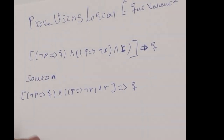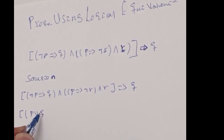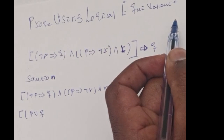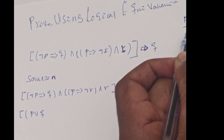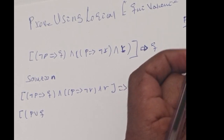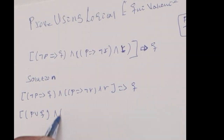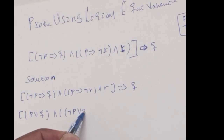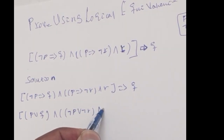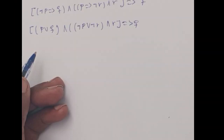So, I either know P or Q. By material implication (MI), P implies Q is equivalent to negation P or Q. And negation P or negation R, and R, implies Q.